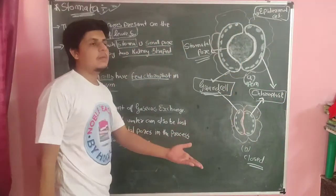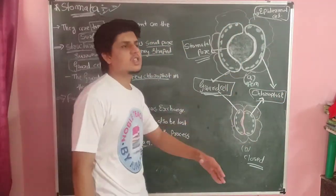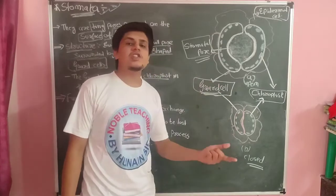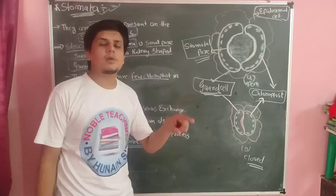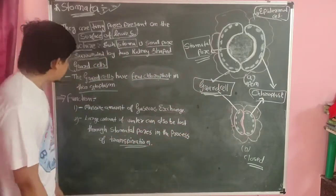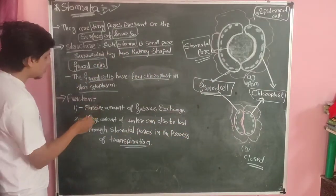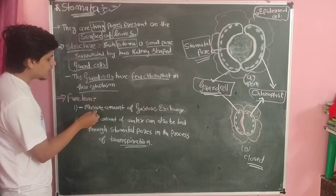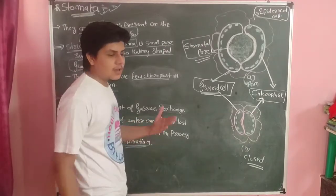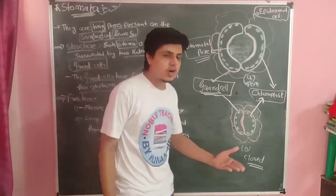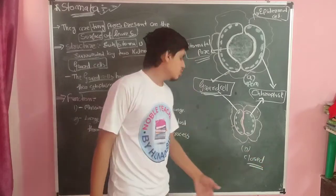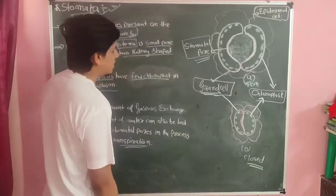Chloroplast is present for photosynthesis. The first function of stomata is the exchange of gases in the process of photosynthesis — a maximum amount of gases are exchanged through the guard cells.